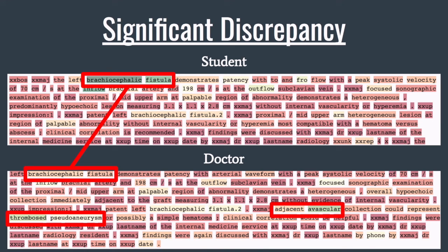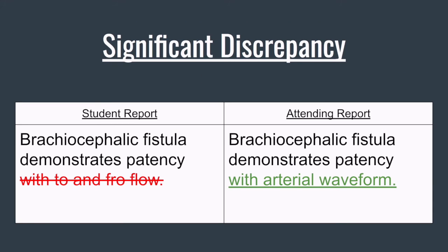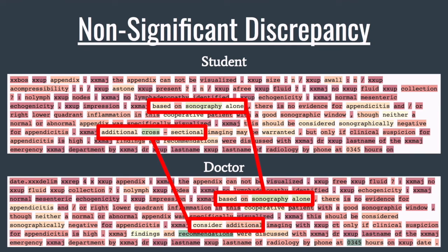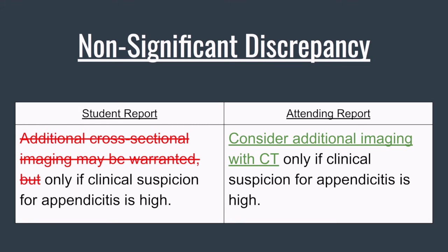Using the classifier model, we were able to significantly improve our visualization capabilities. Certain parts of the document are highlighted in green colors — these are the words that the model has determined are most important to its decision. In this example, the model correctly identified the report pair as disagree. The visualization indicates that the term braciocephalic led to a decision to disagree. As you can see, there is a meaningful difference between what the student and doctor said about the braciocephalic fistula. In addition, the visualization indicates that the doctor made a comment about avascular collection that the student missed entirely. The model is also capable of distinguishing between report pairs with significant and insignificant differences, and has correctly identified a report pair with only minor phrasing differences as agreed.